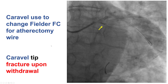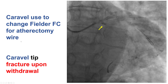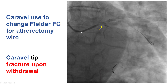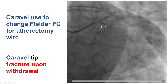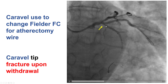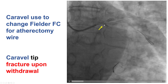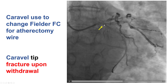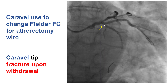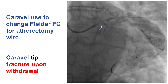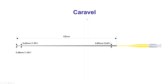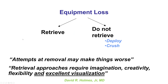Unfortunately, when we tried to remove the Caravel, there was a snap and the Caravel came back — however, the tip remained inside the vessel. We had a fracture of the tip of the Caravel microcatheter staying inside the vessel. This happened even though we did not twist it, but likely because of the significant disease at the ostium of the circumflex.